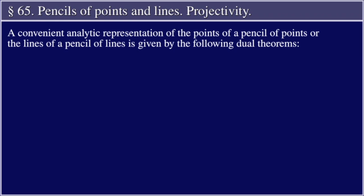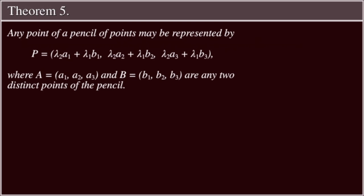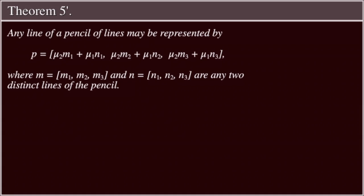Theorem 5: Any point of a pencil of points may be represented by P equal to (λ₂a₁ + λ₁b₁, λ₂a₂ + λ₁b₂, λ₂a₃ + λ₁b₃), where A = (a₁, a₂, a₃) and B = (b₁, b₂, b₃) are any two distinct points of the pencil.